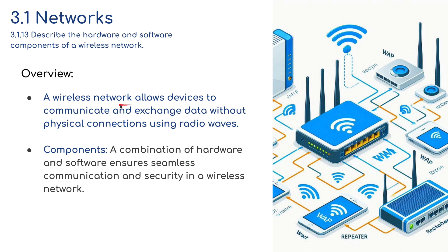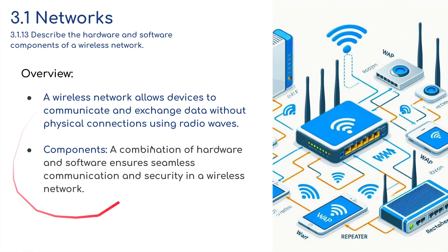So what is a wireless network? It's a network that allows devices to communicate and exchange data without physical connections — basically using radio waves. A combination of hardware and software ensures seamless communication and security in a wireless network system.